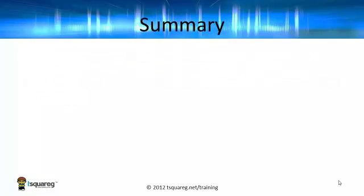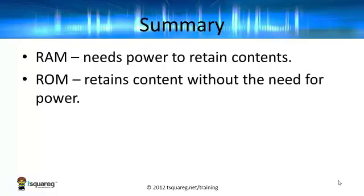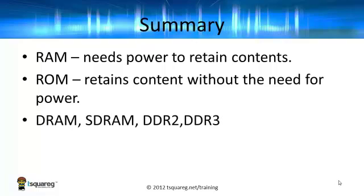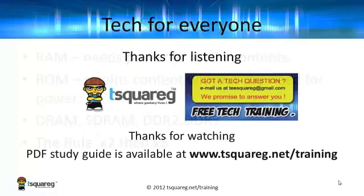In summary, what have we learned here? RAM needs power to retain its contents — it's random access memory and it must have power. ROM will retain its contents without the need for power at all. There are different types of RAM, going from DRAM all the way up to DDR3 RAM. And the simple rule when working out the maximum data rate is: multiply by 2, then multiply by 8. That was another presentation from Tech for Everyone — thank you for listening, and goodbye.